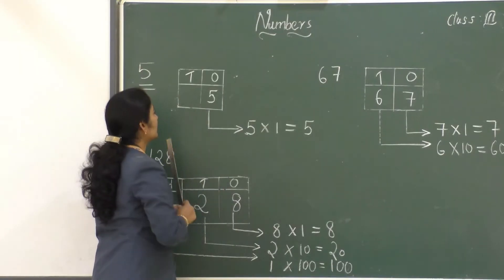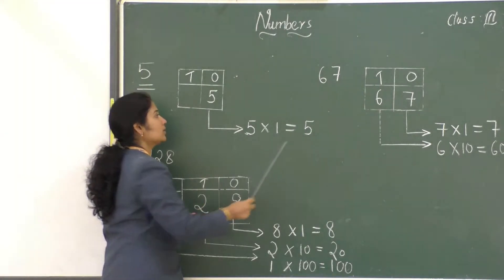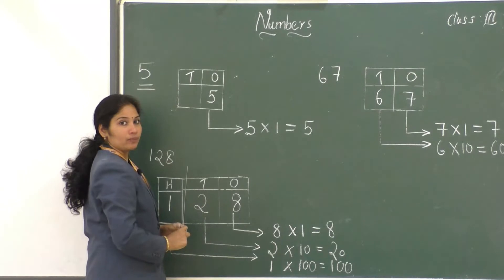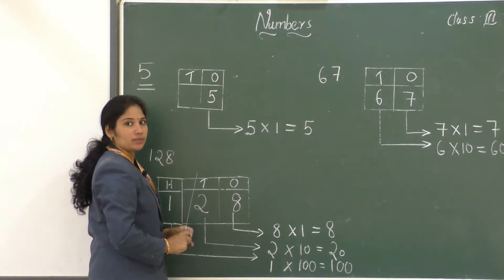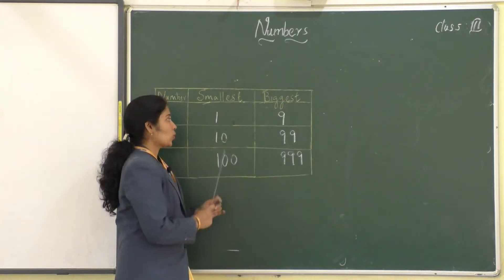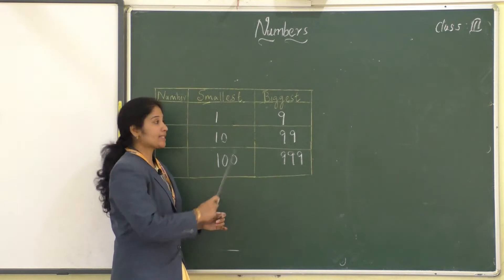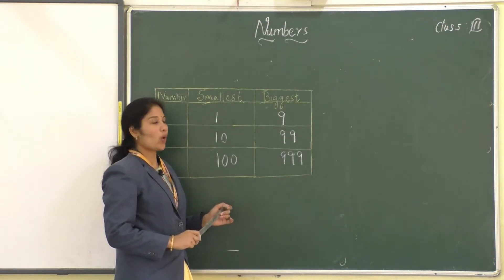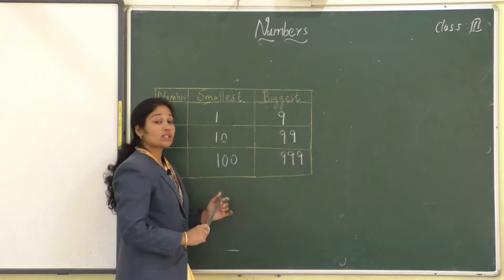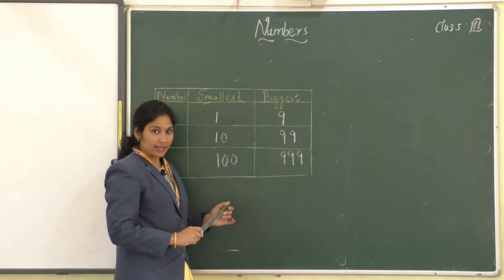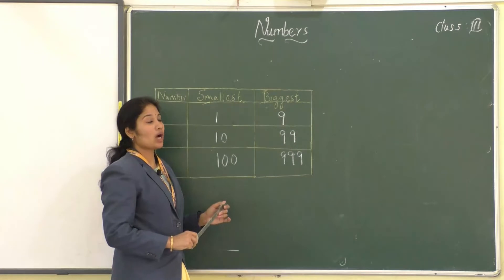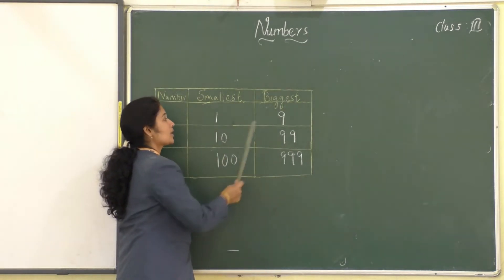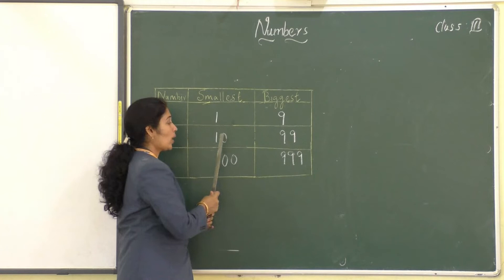Hope you learned about one-digit numbers, two-digit numbers, and three-digit numbers. Let's move on to our topic. We already know what is the smallest one-digit number — yes, 1. What is the biggest one-digit number? 9. If you add 1 to the biggest one-digit number, what will you get?